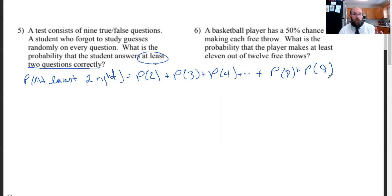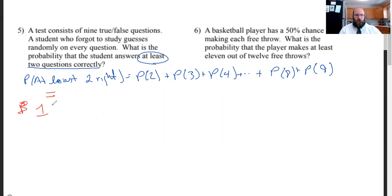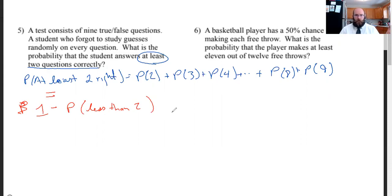There's another way of doing this — probably the easier one. Instead of finding the probability of getting two right and three right and four right and so on, let's find the complement. The probability of getting at least two is equal to 100% minus the probability of getting less than two. So probability of getting two or more equals 100% minus the probability of getting zero correct or one correct.